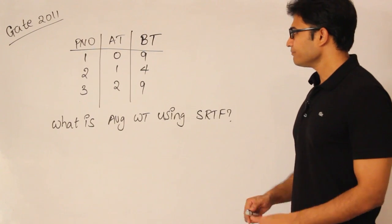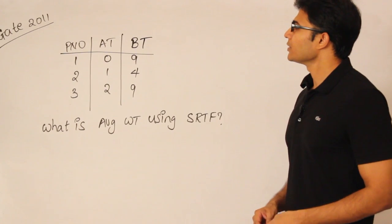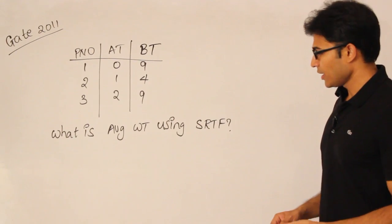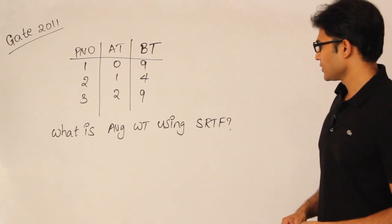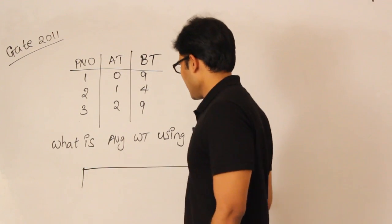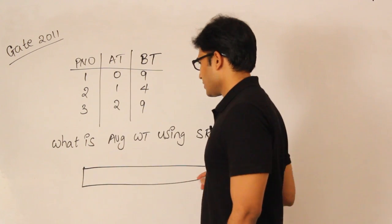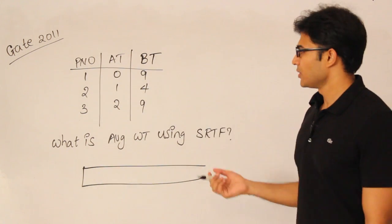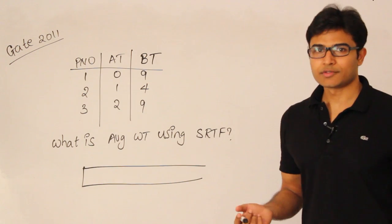Given this problem in GATE 2011, they are asking what is the average waiting time using Shortest Remaining Time First. It is straightforward—you can solve any question in GATE. All the papers will be very simple when it comes to CPU scheduling.